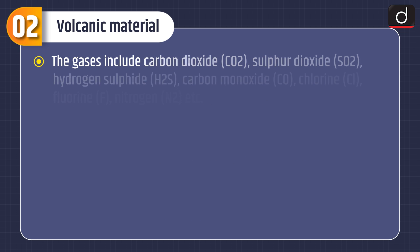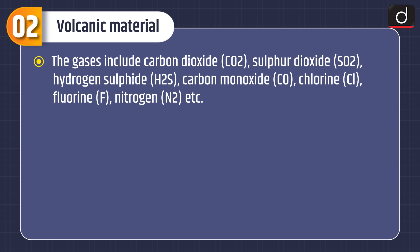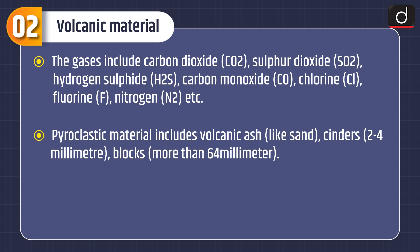The gases include carbon dioxide, sulphur dioxide, hydrogen sulphide, carbon monoxide, chlorine, fluorine, nitrogen etc. Pyroclastic material includes volcanic ash like sand, cinders 2–4 mm, and blocks more than 64 mm.